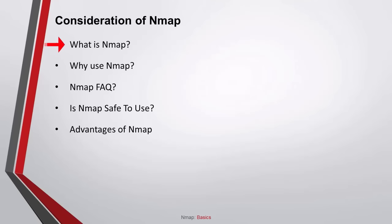Gordon Leon wrote NMAP back in 1997 to help map an entire network easily and find its open ports and services. NMAP has become hugely popular, being featured in movies like The Matrix and the popular series Mr. Robot. NMAP is a mighty tool that can be used for positive or negative purposes. NMAP can quickly recognize all the devices including servers, routers, switches, mobile devices, etc. on single or multiple networks.